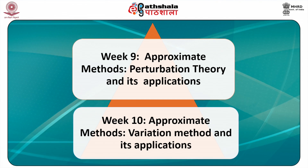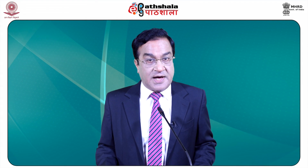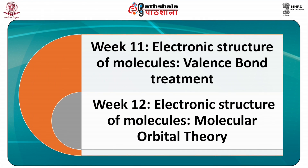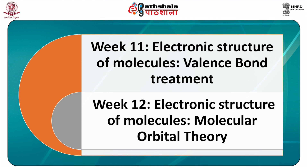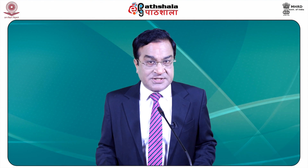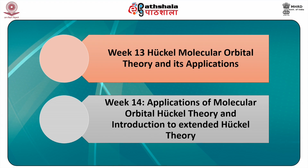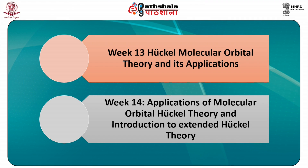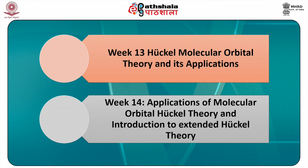Here we will focus on perturbation theory and the variation method and discuss their simple applications in quantum mechanics. The electronic structure of molecules using quantum mechanics forms part of discussion in the eleventh and twelfth weeks, with emphasis on two theories of chemical bonding, namely molecular orbital theory and valence bond theory, and their simple applications. In the thirteenth and fourteenth weeks we shall discuss the Hückel molecular orbital theory, its assumptions, and applications to simple organic conjugated molecules. An introduction to extended Hückel theory shall also be part of discussion in this week.